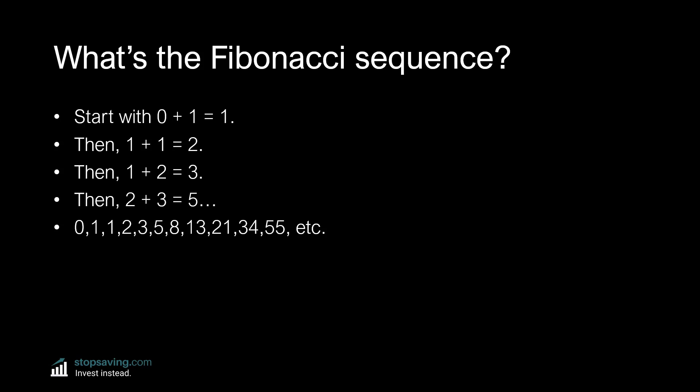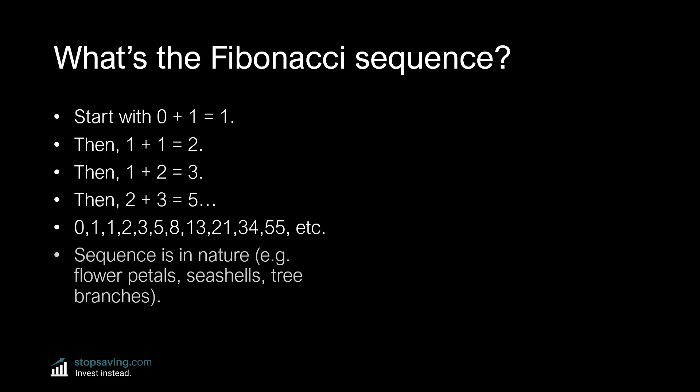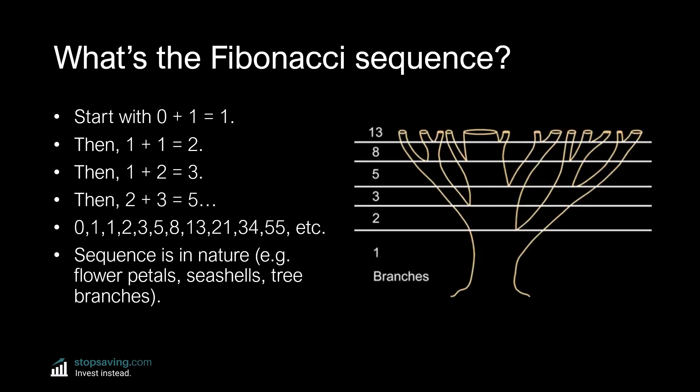Here's where it gets interesting, though. This sequence appears all over nature. You can find it in things like flower petals, seashells, and even tree branches. Take a look at this image of a tree on the right-hand side. The first branch splits into two branches, then one branch grows first to give the next number in the sequence, 3. If you plant a tree, there's a good chance it will follow a similar pattern as it grows.